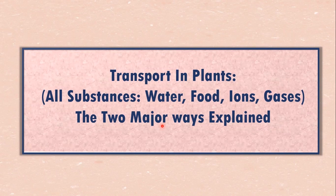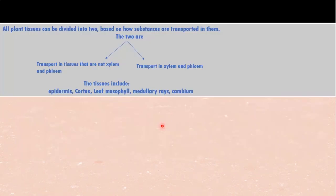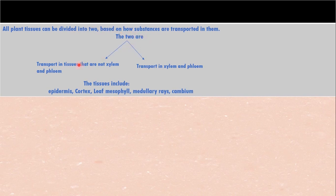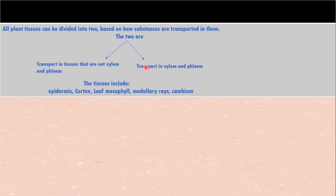There are two major ways we can look at all these. All plant tissues can be divided into two groups based on how substances are transported in them. One group is tissues that are not xylem or phloem — these include the epidermis, cortex, leaf mesophyll, medullary rays, and cambium. The other group is the transporting tissues: xylem and phloem.